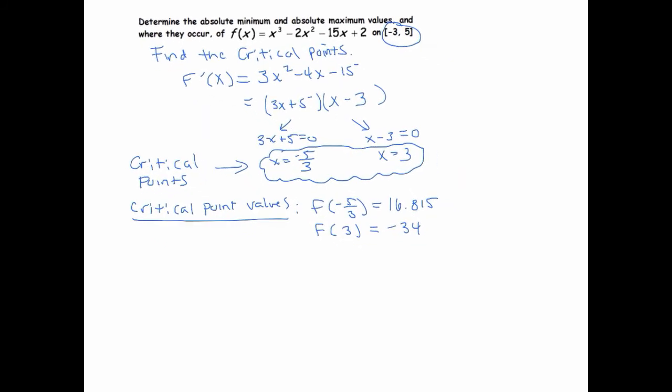So obviously the y value at negative 5/3 is bigger than the y value at 3. That doesn't tell me that I found an absolute max at negative 5/3 because I have to check the endpoints.